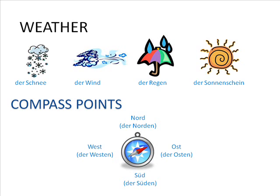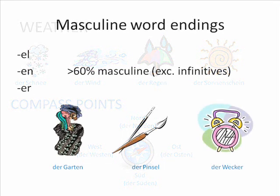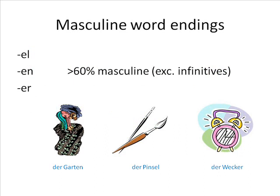Hammer also lists eight different word endings which are always masculine, but I have never found enough words with these endings to consider them worth learning. Instead, I prefer to remember the statistic that most nouns — over 60% according to Hammer — ending in '-el', '-en', and '-er' are masculine, with the exception of infinitives used as nouns, which all end in '-en' and are also always neuter. So it's well worth guessing masculine for words you don't know that end in '-el', '-en', or '-er', memorising any exceptions you use a lot.